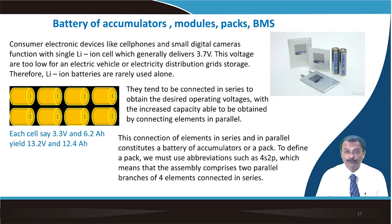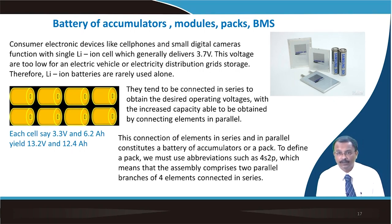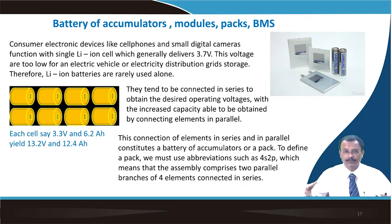For heavy-duty applications, cells are connected in series to increase voltage and in parallel to increase capacity. For example, if each cell has a nominal voltage of 3.3 V and capacity of 6.2 Ah, connecting four in series gives 13.2 V and two in parallel gives 12.4 Ah. This series and parallel connection of elements constitutes a battery pack — loosely called a pack — and is defined using abbreviations like 4S2P, meaning 4 cells in series and 2 in parallel.